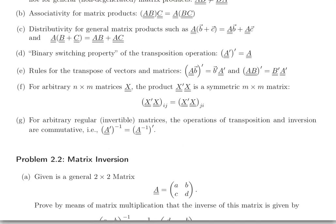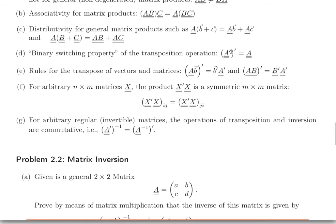The binary switching property of the transposition operation: double transposition gives the original. That's why it's called switching — each transposition swaps rows and columns, and by definition double swapping restores the original state. So double transposition gives the original object — it's an on/off/on/off property.